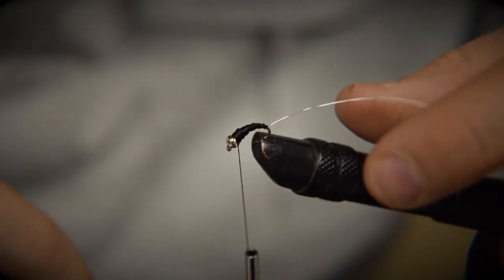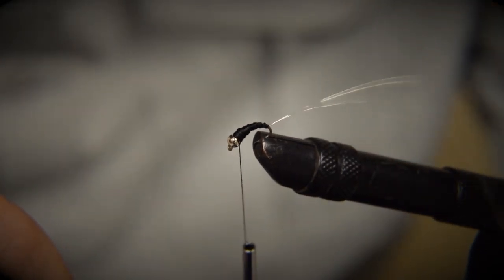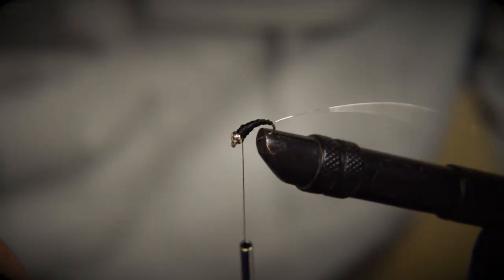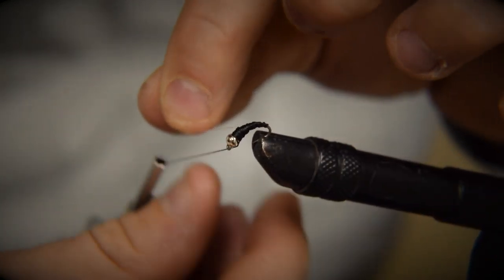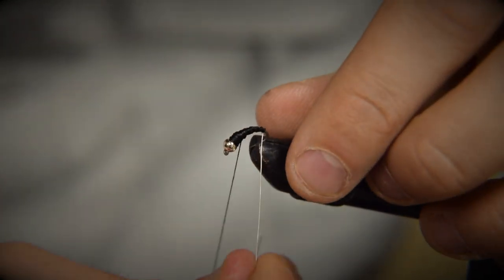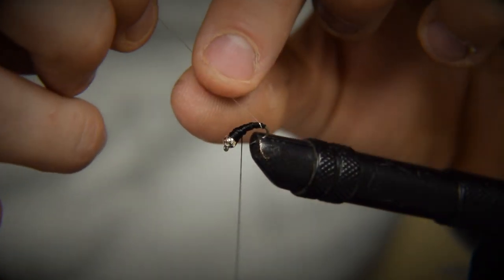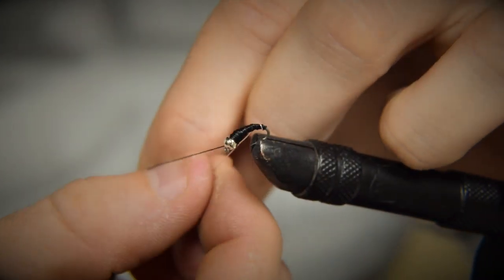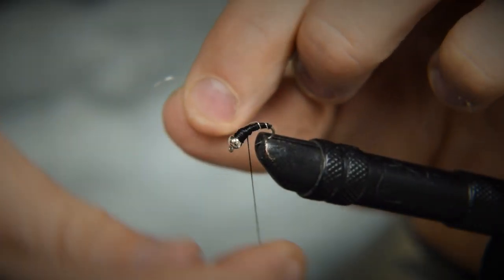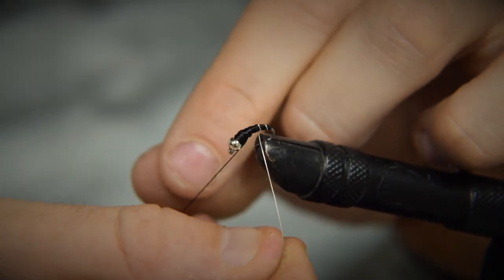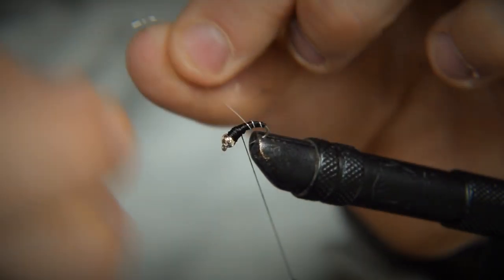My next step is I'm going to take that wire that's hanging out the back of the bend of our hook. We're going to use that wire to counter wrap. So we're going to start by coming towards ourselves first, going around our zebra midge in nice, even length. So we're trying to section off that body so it's nice and perfectly symmetrical as I'm going around, that wire's wrapping on there.